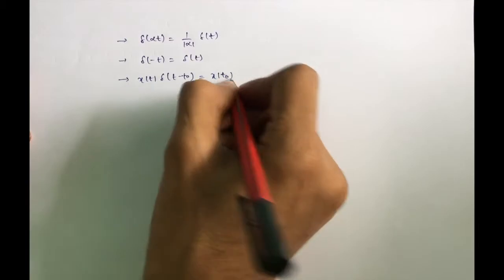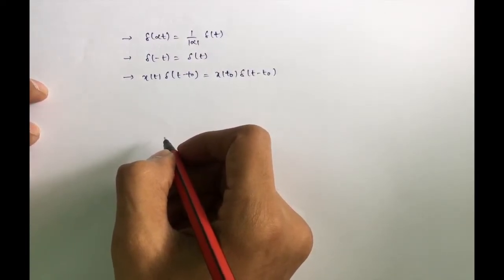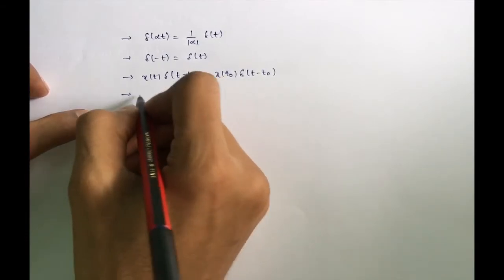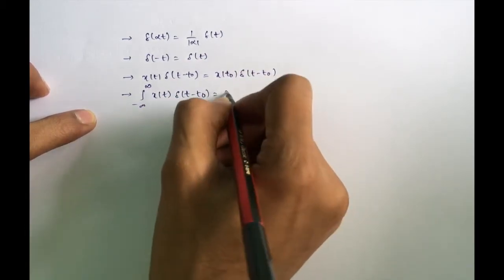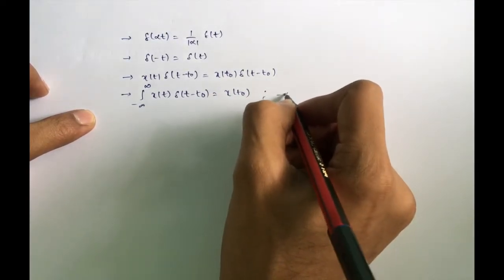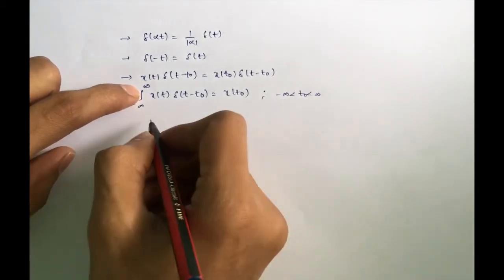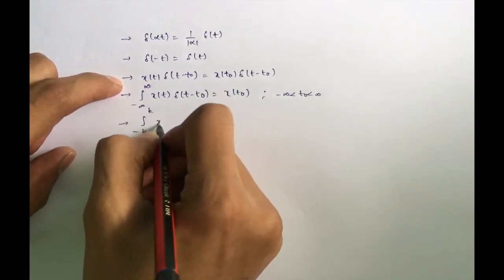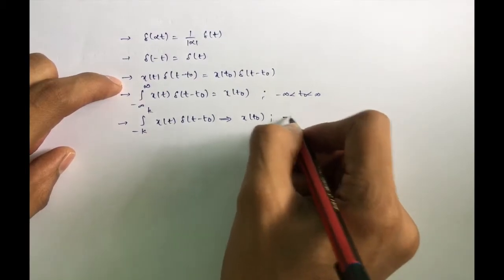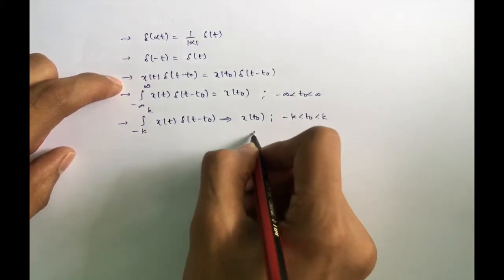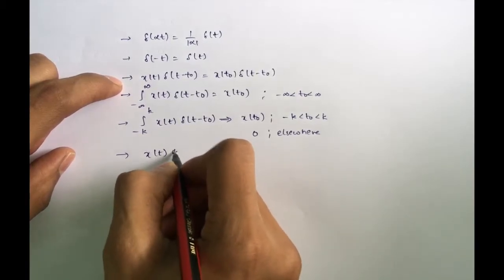We have x(t) · δ(t - t₀), where δ(t - t₀) is δ(t) shifted by t₀ in the right direction. For the integral case, the integral of x(t) · δ(t - t₀) equals x(t₀), provided t₀ lies within the interval given by the limits. For example, the integral from -k to +k of x(t) · δ(t - t₀) equals x(t₀) for -k < t₀ < k, or else zero.